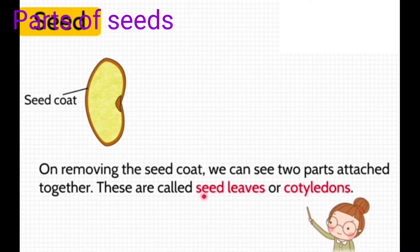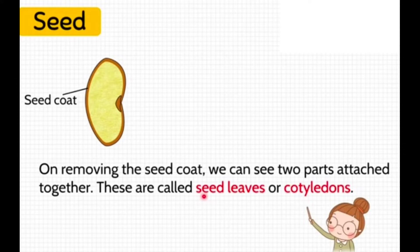On removing the seed coat, we can see two parts attached together. These are called seed leaves or cotyledons.